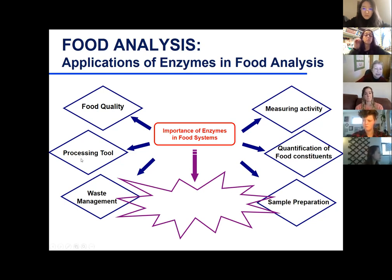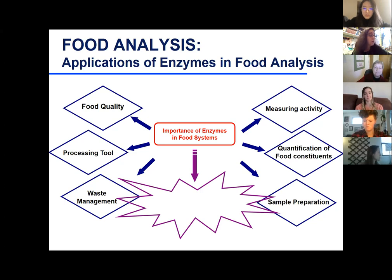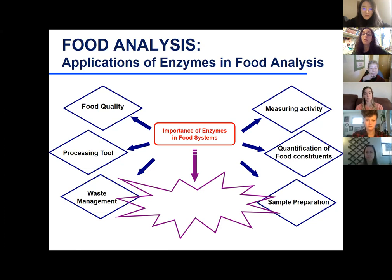The processing tools category had several examples: rennet, papain for meat processing, lactase for lactose-free milk. For food quality, polyphenol oxidase is one example. Another is alkaline phosphatase — have you heard of that? Maybe in a dairy or processing class? When we need to pasteurize milk, the intent is to kill harmful pathogens, but it would take days to test for those pathogens directly.